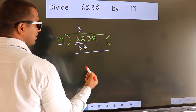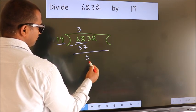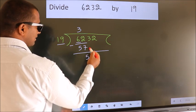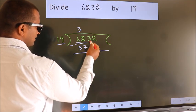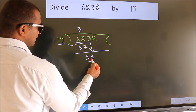Now, we should subtract. We get 5. After this, bring down the beside number. So, 3 down. So, 53.